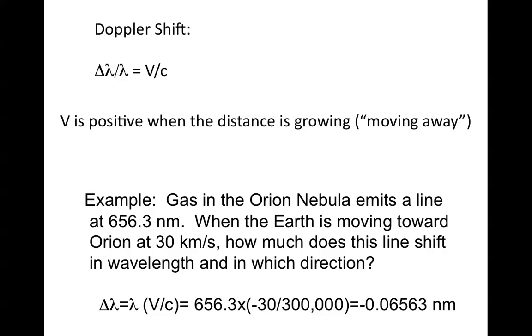Why did I pick 30 kilometers a second? Because that's the orbital speed of the Earth around the sun, so the actual velocity does change because of that.